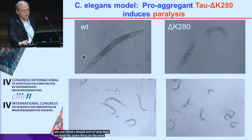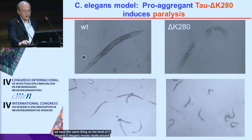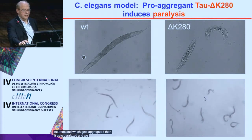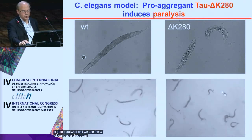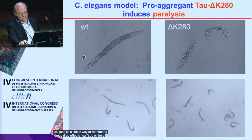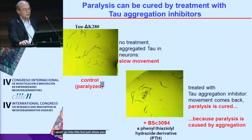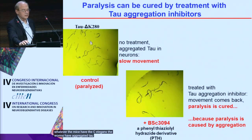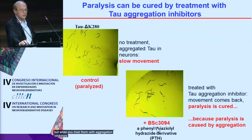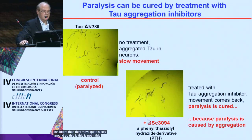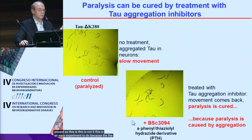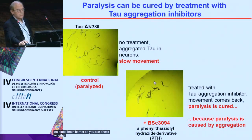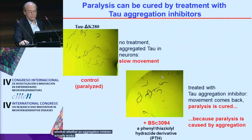We have the same results in C. elegans. C. elegans moves normally, but when it expresses tau in the neurons that becomes aggregated, it gets paralyzed. We use C. elegans as a cheap way of monitoring drug effects. When paralyzed, the worms have aggregated tau in the neurons, but when treated with aggregation inhibitors, they move quite normally. This is an easy experiment because the worms take up drugs much better than mice — there is no blood-brain barrier — so you can check whether an aggregation inhibitor actually works relatively quickly.